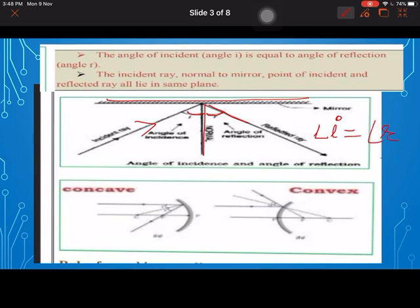Second is the incident ray, normal to mirror, point of incidence, and reflected ray all lie at the same plane. You can see this point incident, normal, and reflected all are lying at a single point. So this one is there.